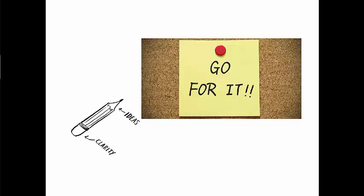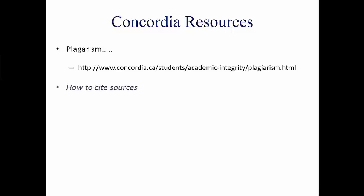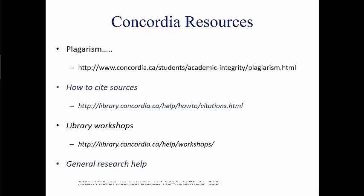If you're a student at Concordia, there are many resources available to you to strengthen your writing. Of course, no video on writing would be complete without a warning against plagiarism. Basically, don't do it. If you are unsure what plagiarism means, there is a link in the description below that you can follow for a full description. Similarly, there is a link on how to cite sources within any given citation style, a link for library workshops, and also one for general research help. Here you'll find information on how to start researching, as well as the ability to ask a librarian.